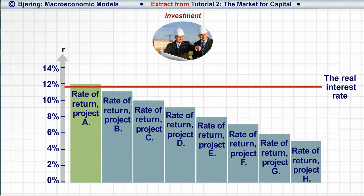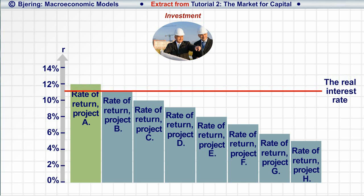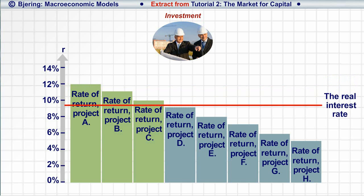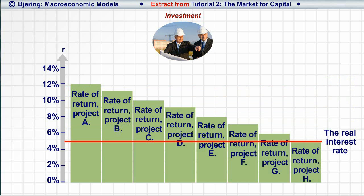At 11% or lower, project B as well becomes profitable, so both project A and B are realized — and so on, until even project H is profitable and realized.